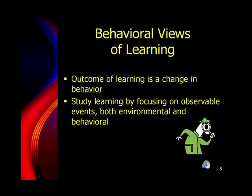While the neuroscientists were looking inside the brain to see what was going on physiologically when we learned things, behavioral scientists were focusing on learning from the perspective of a change in behavior, because at the time we couldn't see inside the brain. So they studied learning by focusing on observable events and environmental and behavioral factors.